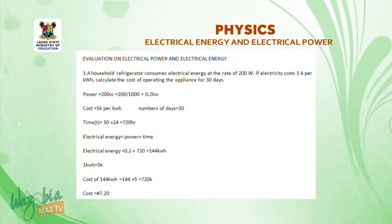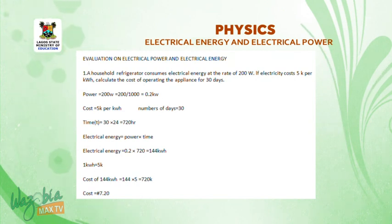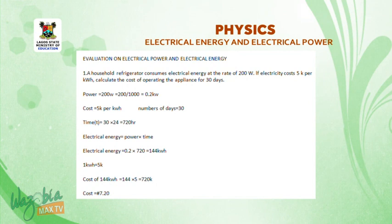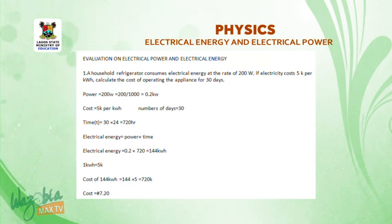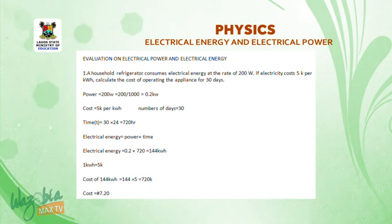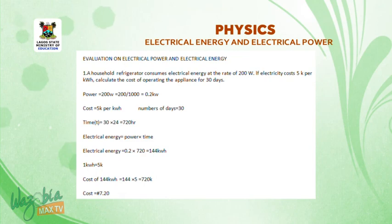Example 1: A household refrigerator consumes electrical energy at the rate of 200 watts. If electricity costs 5 kobo per kilowatt-hour, calculate the cost of operating the appliance for 30 days. Power = 200 watts = 200/1000 = 0.2 kilowatts. Cost = 5 kobo per kilowatt-hour. Time = 30 days × 24 hours = 720 hours. Electrical energy = power × time.